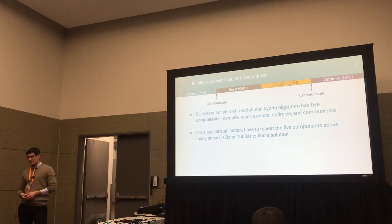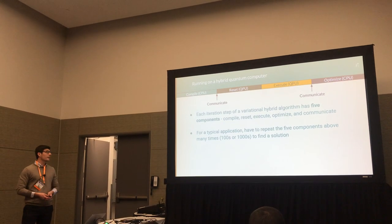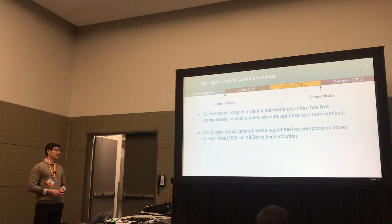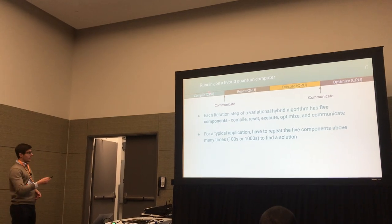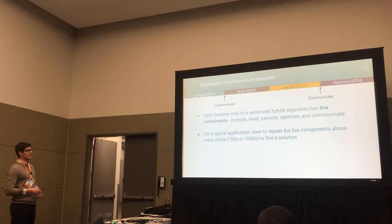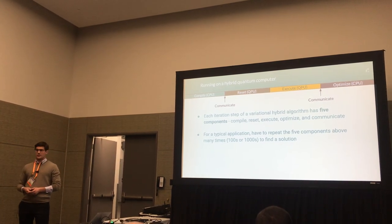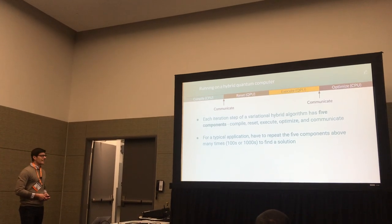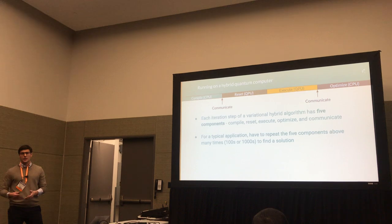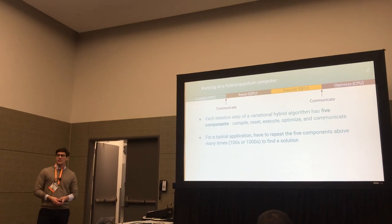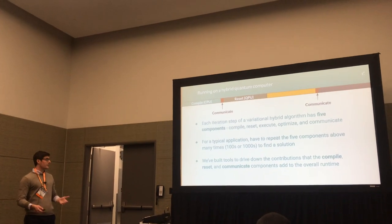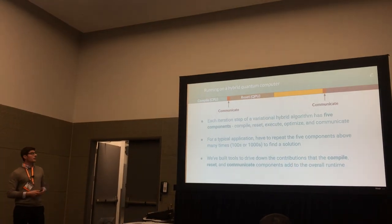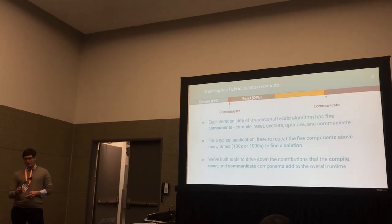When running one of these variational hybrid algorithms on a quantum computer, each iteration step of the algorithm has five components that contribute to its overall runtime. These are compilation, reset, execution, optimization, and the communication between quantum and classical resources. For a typical hybrid application, we have to repeat each of these five components many, many times — hundreds of thousands of times — before we can find a solution to our problem. For this talk, we'll be focusing on tools we've built to drive down the contributions of the compile, reset, and communication components to the overall runtime.